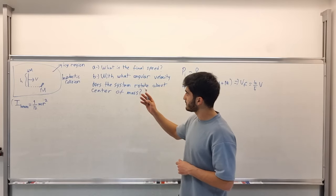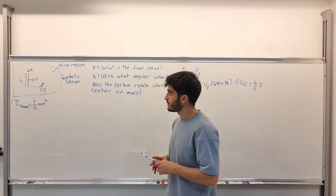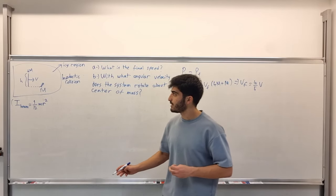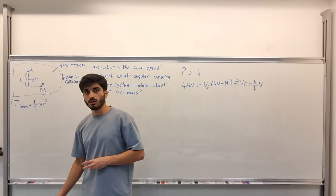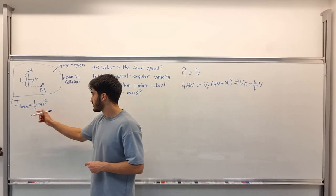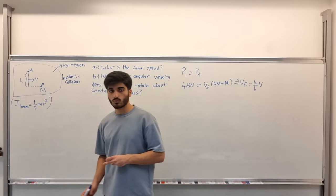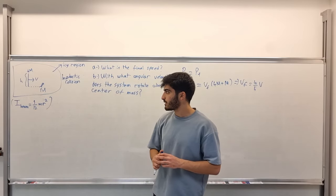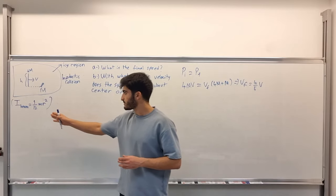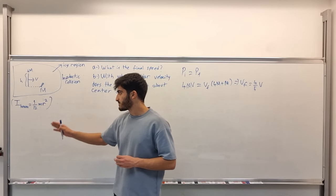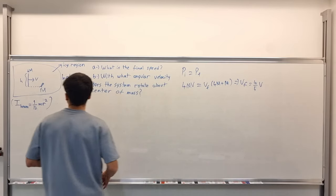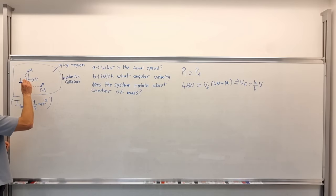For part b, we need to calculate the angular momentum with respect to the center of mass. The moment of inertia of the beam about its own center is given as (1/12) times mass times r squared. Now let's calculate how far away the center of mass of the system is.